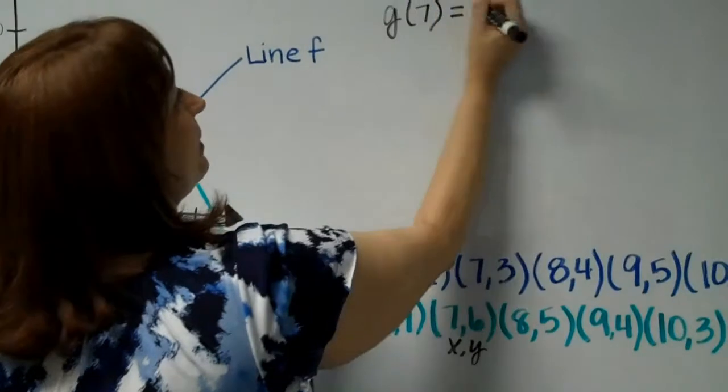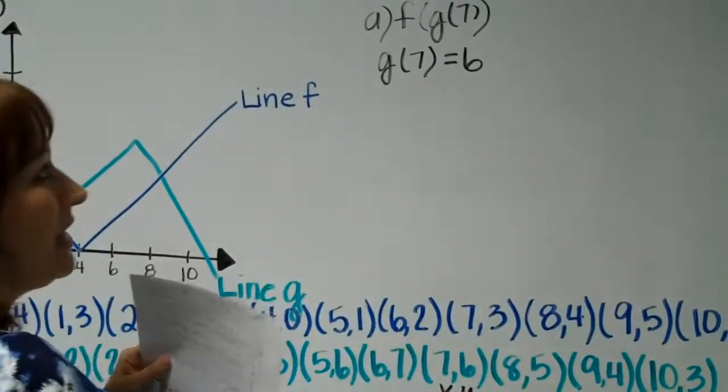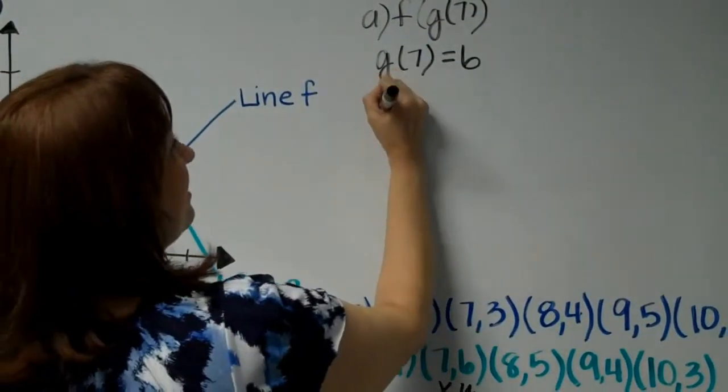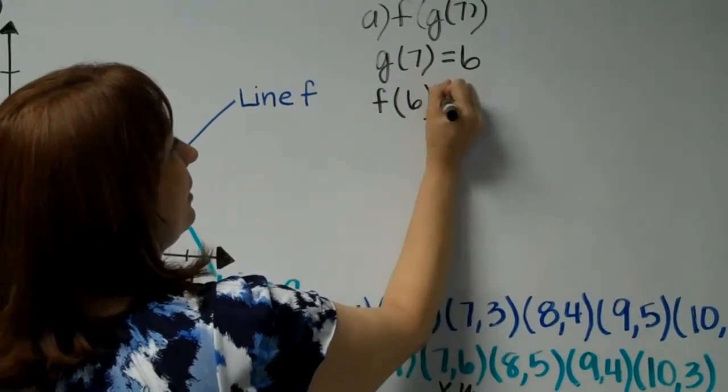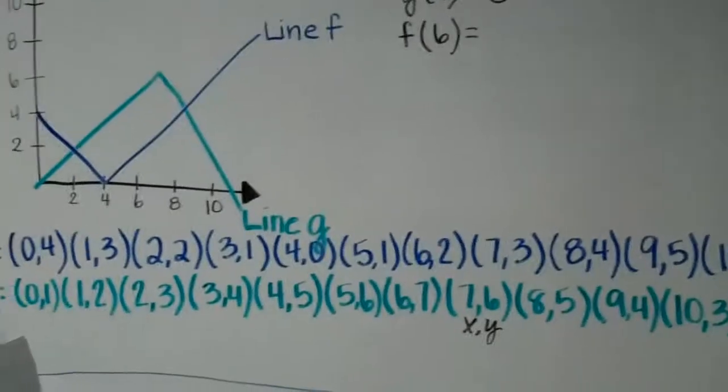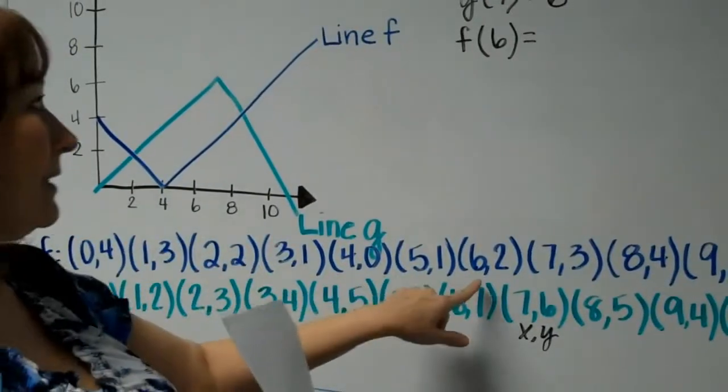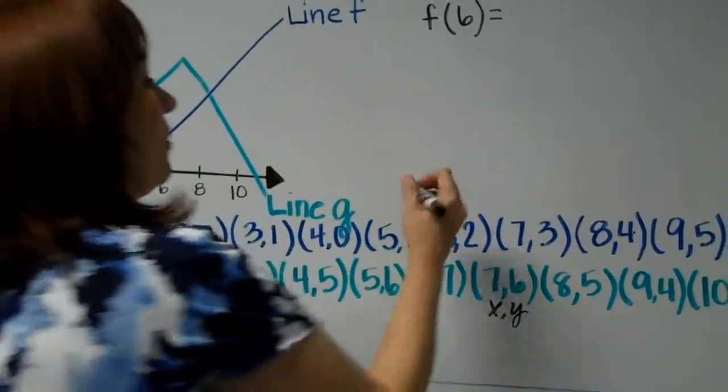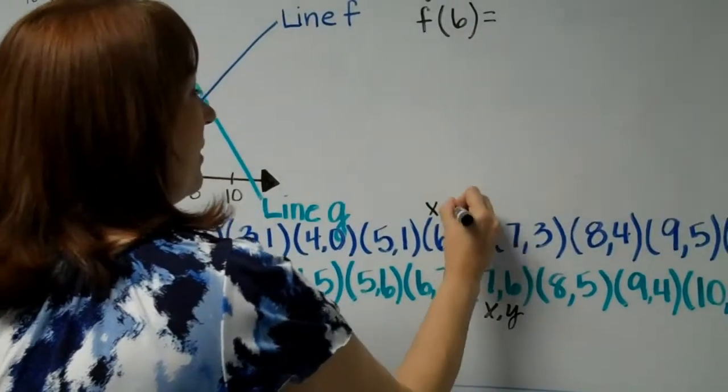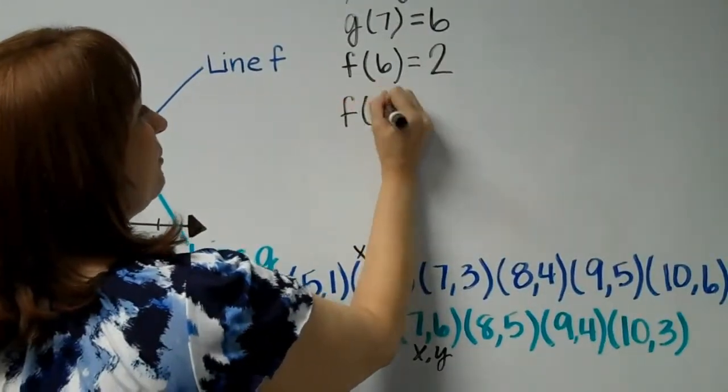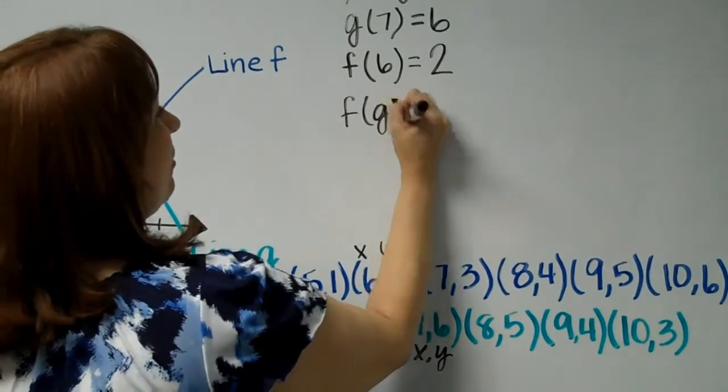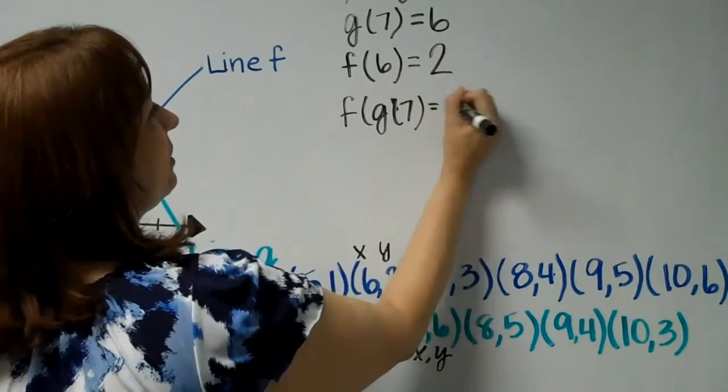So G of 7 equals 6. Then you're going to want to find F of 6. Go down to your F line, look for the X coordinate 6. Your Y coordinate is 2. So F of G of 7 equals 2.